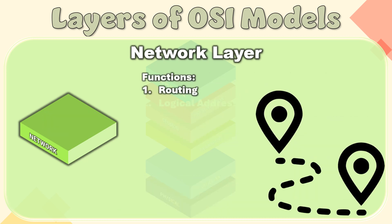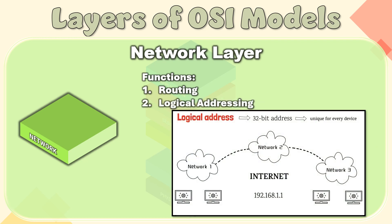Functions of the Network Layer. Routing: The network layer protocols determine which route is suitable from source to destination. This function of the network layer is known as routing. Logical Addressing: To identify each device on an inter-network uniquely, the network layer defines an addressing scheme. The sender and receiver's IP addresses are placed in the header by the network layer. Such an address distinguishes each device uniquely and universally.